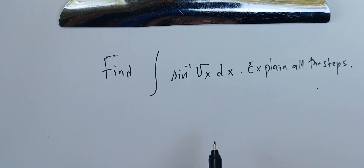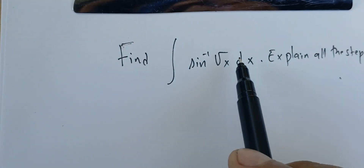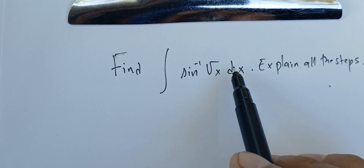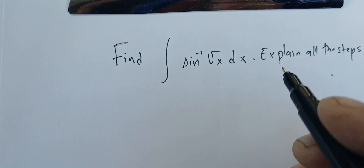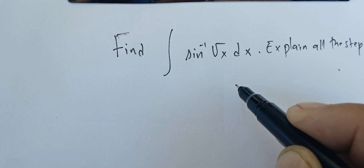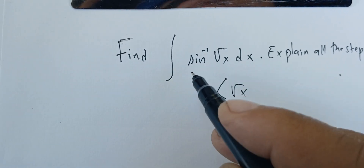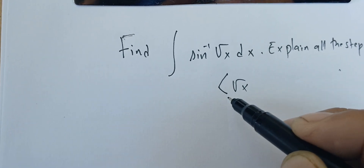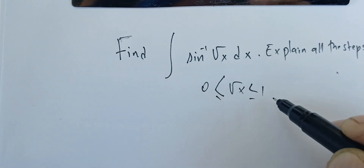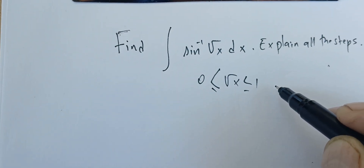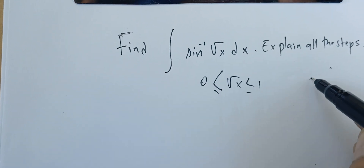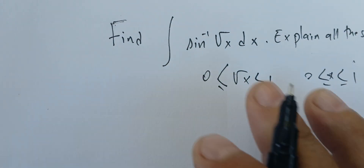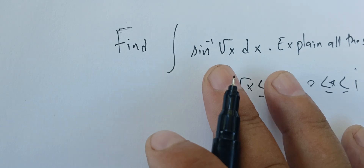The first thing we need to do is note that sin⁻¹(√x) is defined only if √x is between -1 and 1. But √x is defined when x is between 0 and 1, so both conditions together give us that x is between 0 and 1.